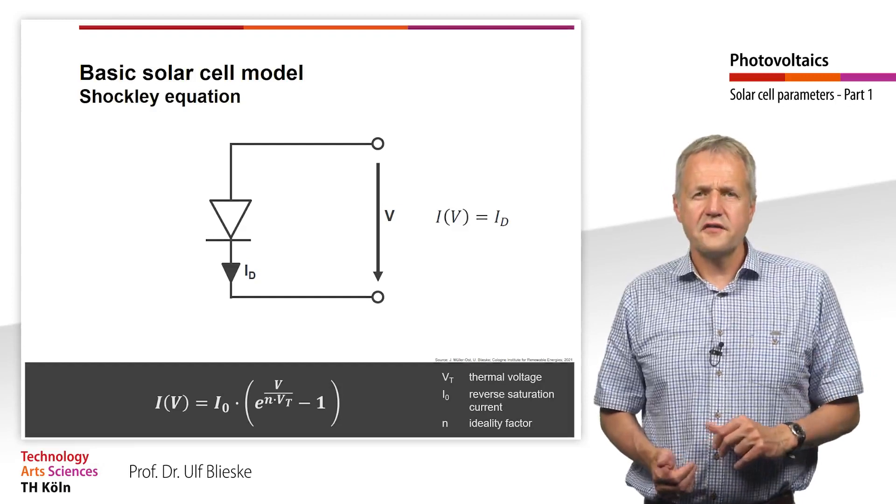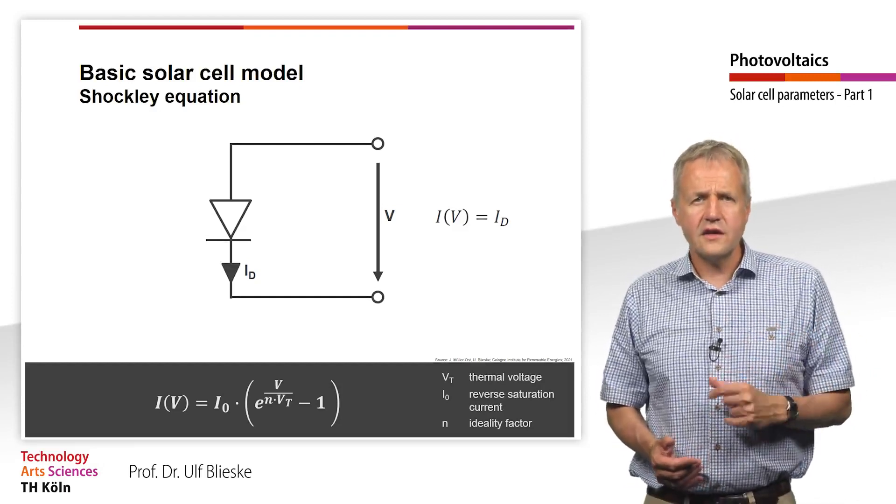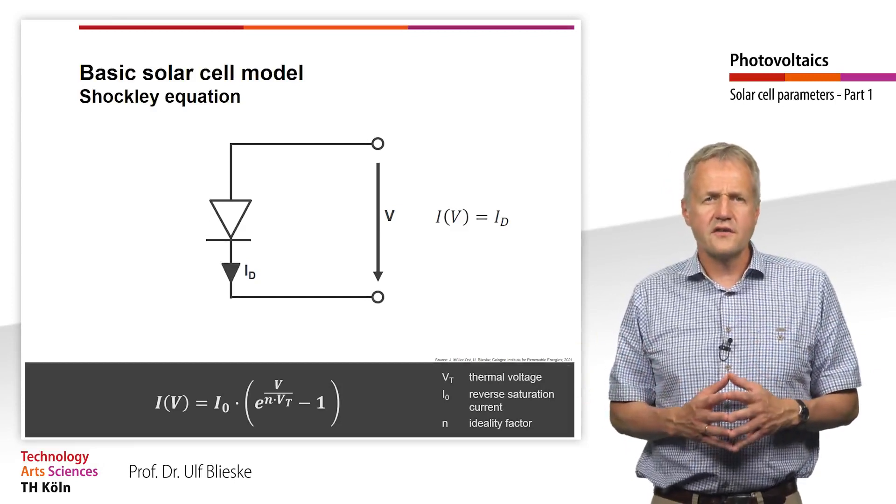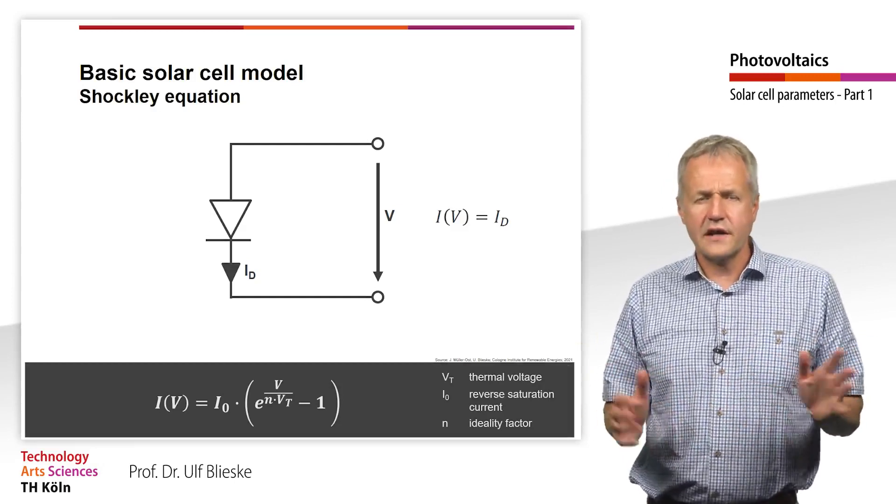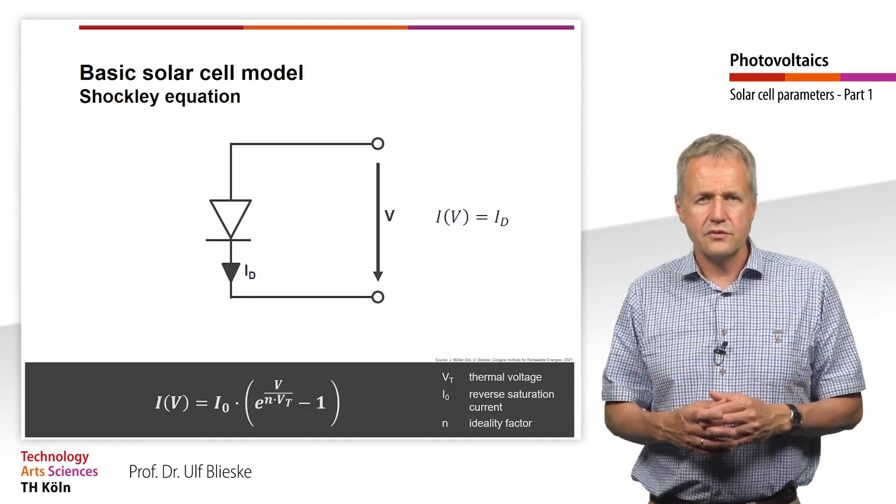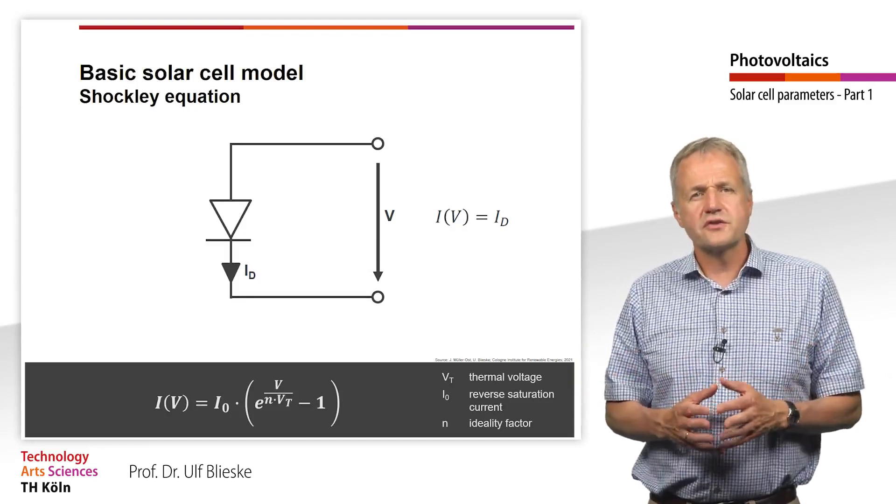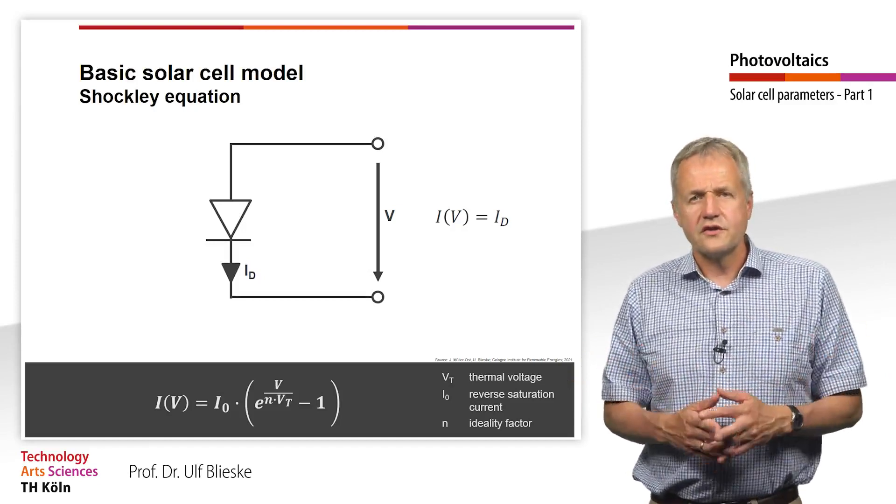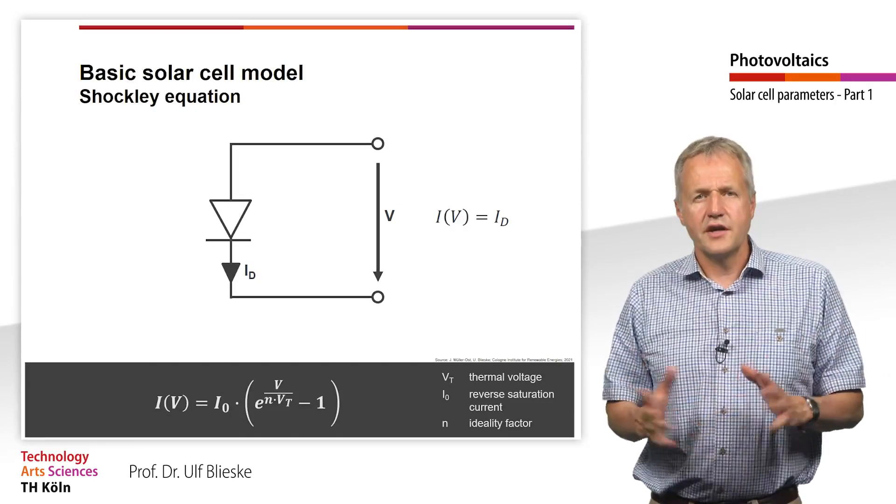The ideality factor of an ideal solar cell is 1. If various recombination losses are taken into account, the ideality factor usually is between 1 and 2. In this chapter we want to try to understand the behavior of an ideal solar cell, so we won't consider the ideality factor anymore.